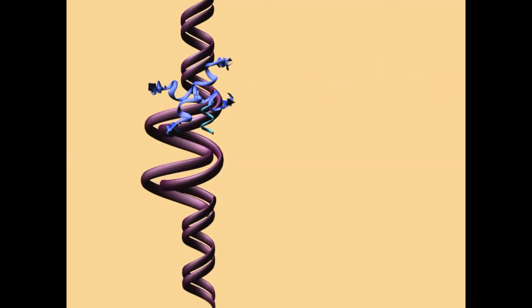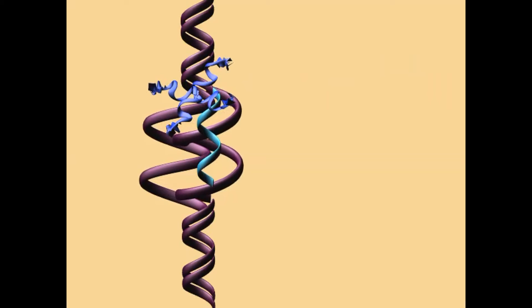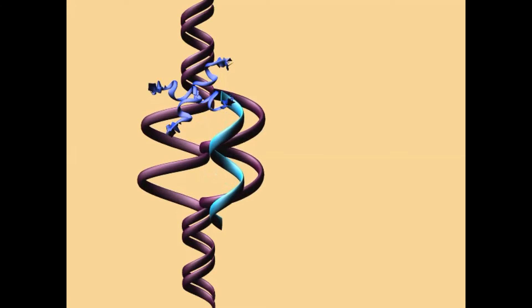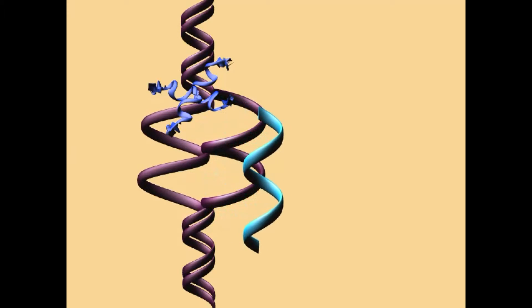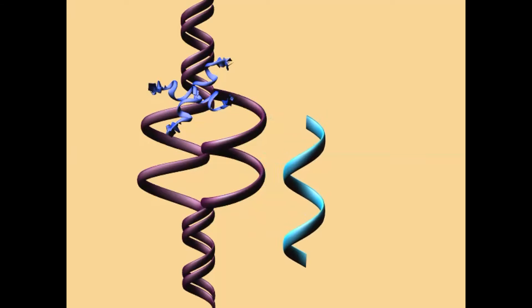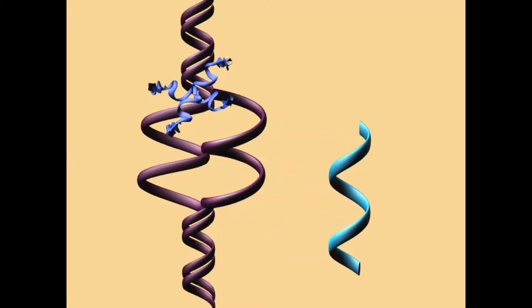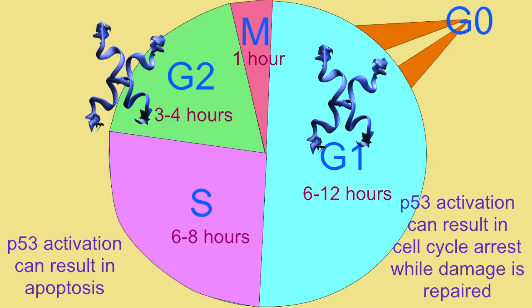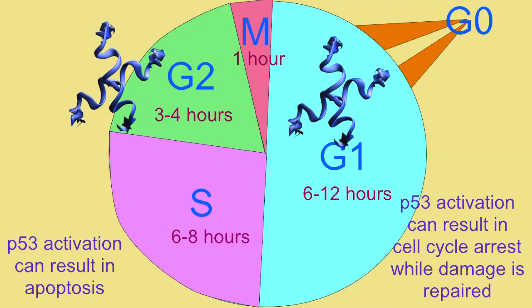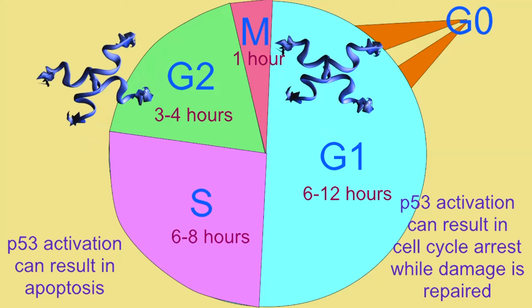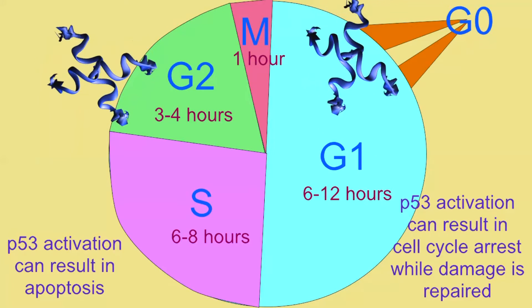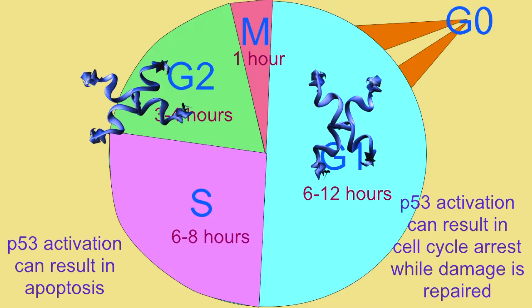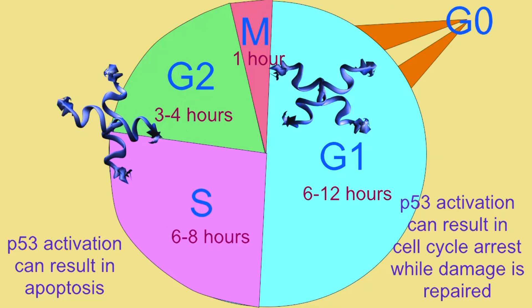P53 has many functions in the regulation of the cell cycle and can interact with a number of proteins. Its major function is its ability to bind to DNA and to turn on the activity of some genes by allowing transcription while repressing other genes. If p53 is activated early in a cell cycle, this could initiate responses to damaged DNA so that the cell cycle is arrested and the cell does not divide.